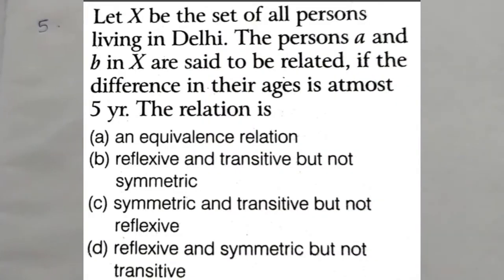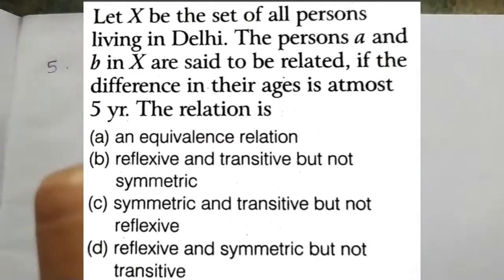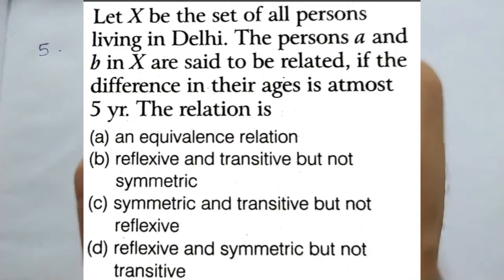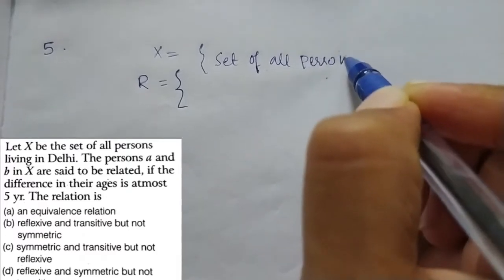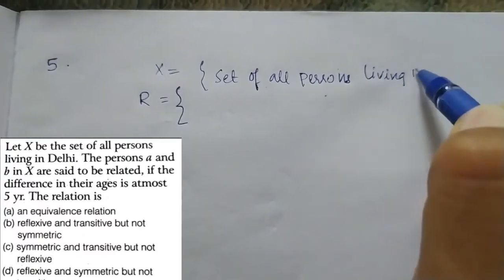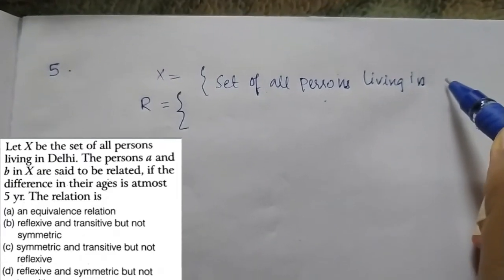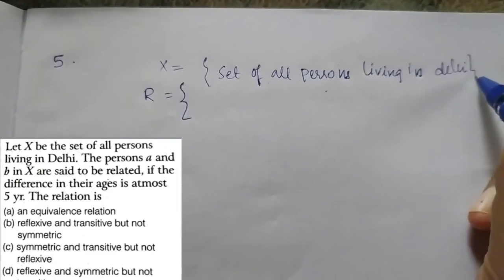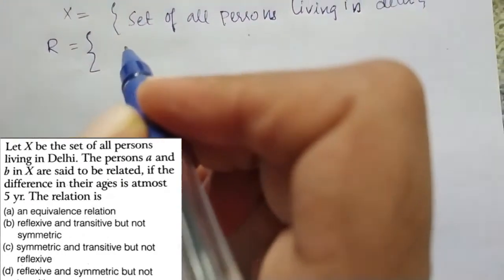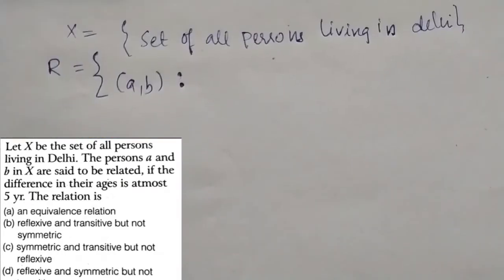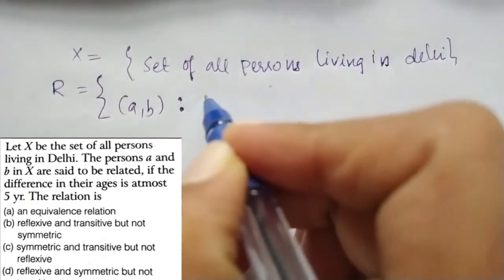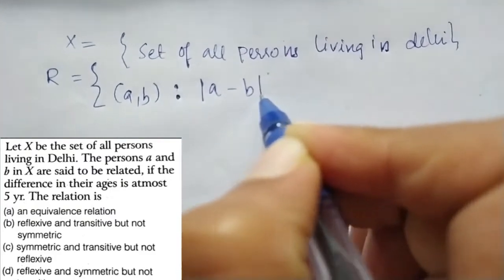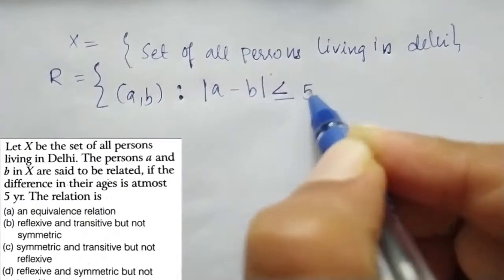Next question: X is the set of all persons living in Delhi. The relation R is defined as: (a, b) such that the difference in their ages is at most five years, i.e., |a − b| ≤ 5.